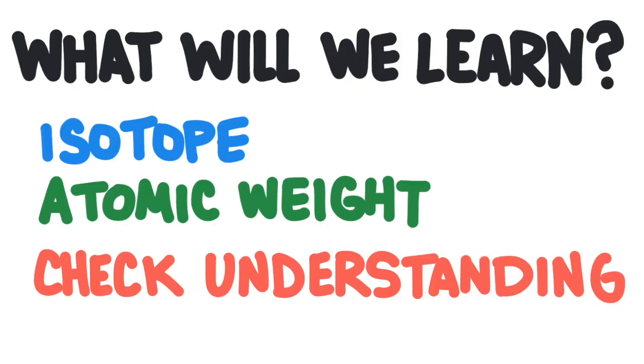So what are we going to learn in this video? First we'll define the terms isotope and atomic weight. Then we'll learn how to calculate atomic weight of an element. At the end of the video, there will be a problem that you could try to solve so you could check your understanding.